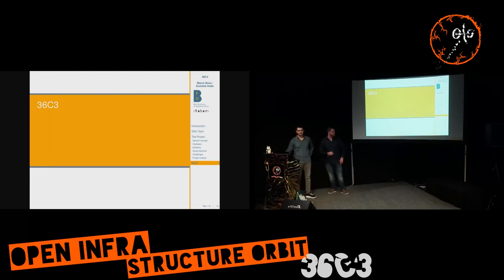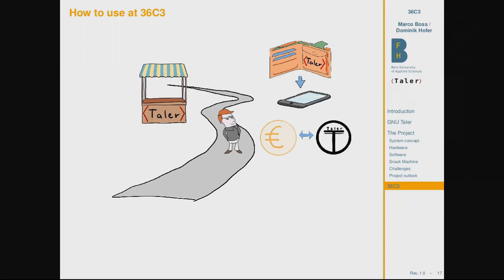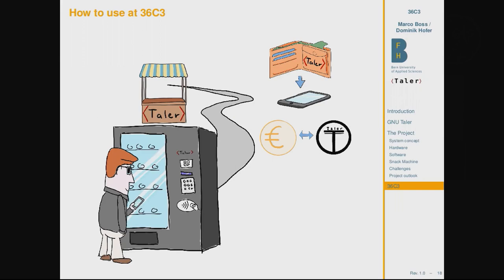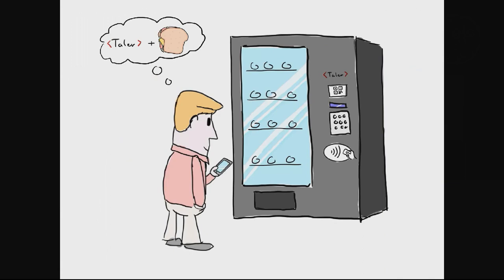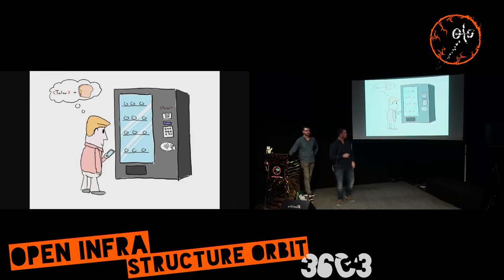How does it work here at 36C3? First, download the wallet to your mobile phone via the Play Store or with the link at our stand. Then come to us where you can exchange your euros to Taler coins and withdraw them to your wallet. When you have withdrawn these coins you can have fun spending them on our snack machine. So just like Fred from the beginning — who was hungry and angry — now he's happy because he can pay for food with a Taler wallet via NFC or QR code. I hope it will be the same for you when you visit us at our stand.